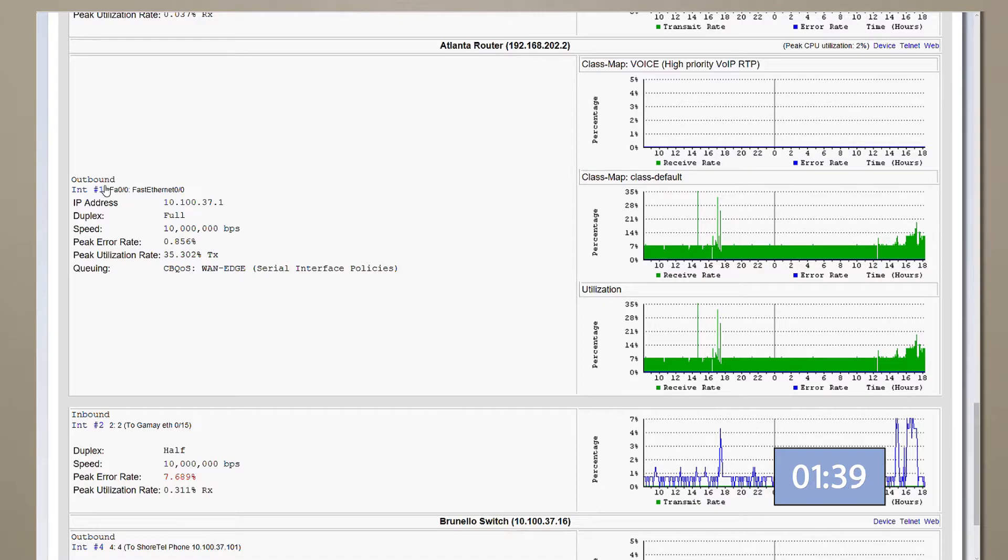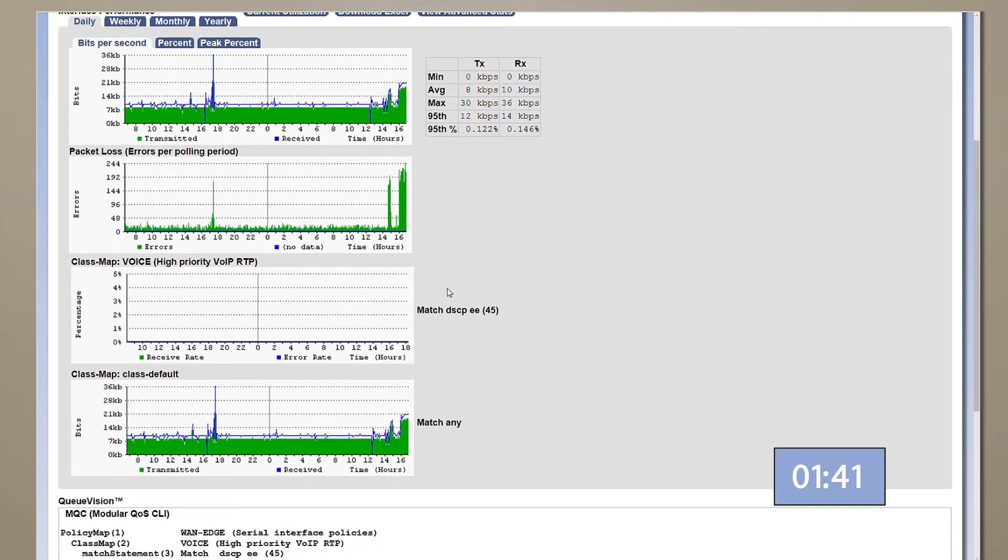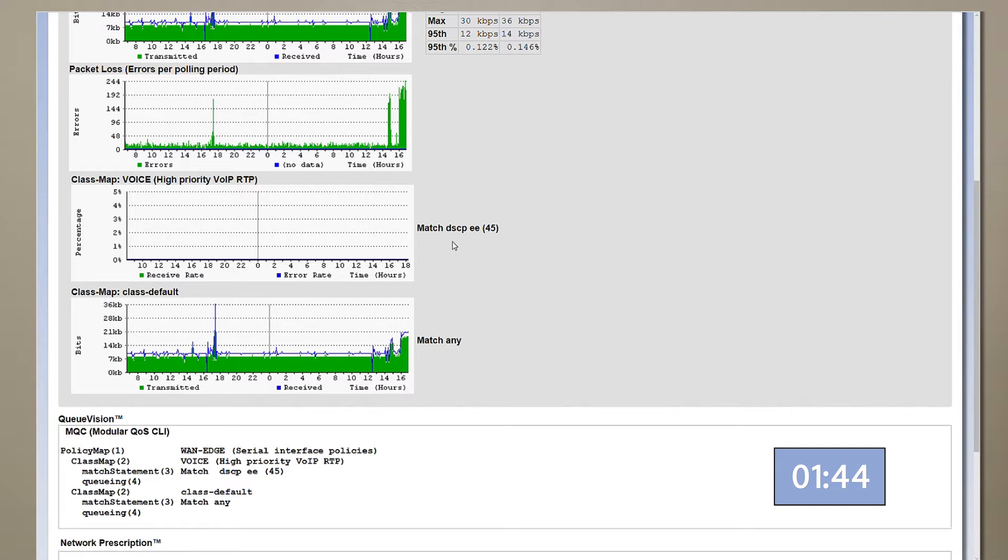When we look at the interface, we see the queues as well as the queue match conditions. Oops. It looks like it's configured to match DSCP EE traffic. It should be configured to match EF traffic.